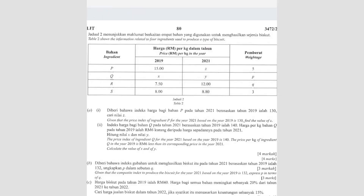Question number 14. Table 2 shows information related to 4 ingredients used to produce a type of biscuit. These are the 4 ingredients P, Q, R, S, with the price per kg in 2019 and 2021, and their weightage.